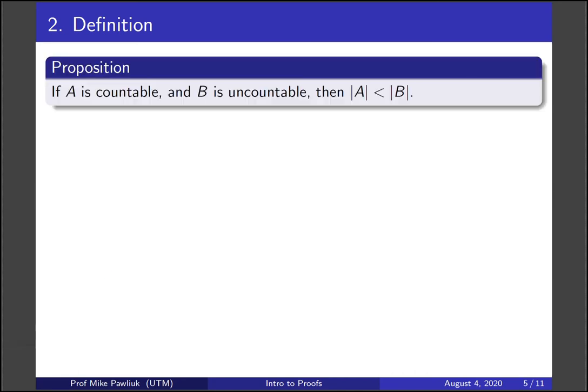So if A is a countable set and B is uncountable, then the cardinality of A is strictly less than the cardinality of B. This gives us a formal way of saying that uncountable sets are larger than countable sets.